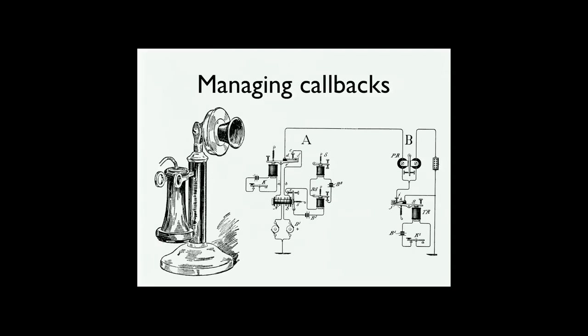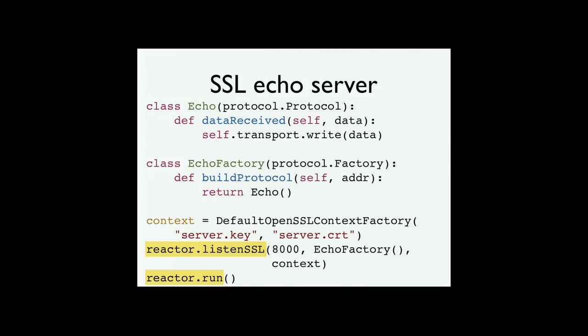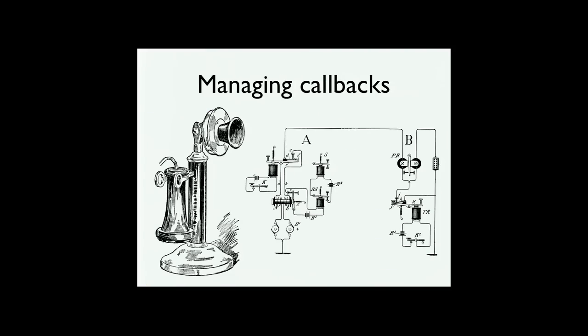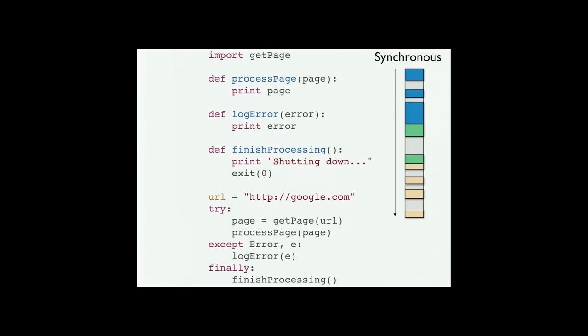There's one thing we haven't totally talked about yet, which is happening under the hood. When you have this event loop and you're registering callbacks with it, you need some way of managing those callbacks. In particular, if we were constructing more complicated protocols and writing our own, we might need to take care of registering callbacks ourselves. So the question is: what does managing callbacks look like in the Twisted world? To motivate this, let's start from the beginning with callbacks.